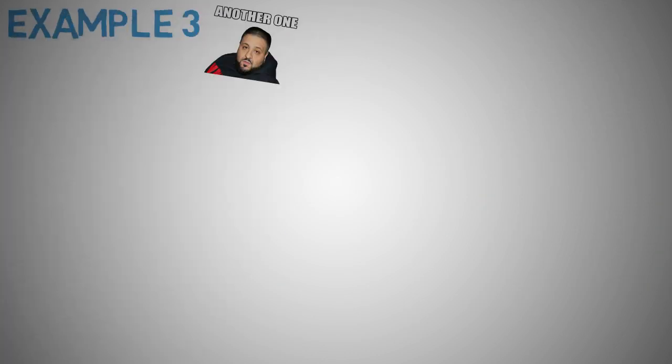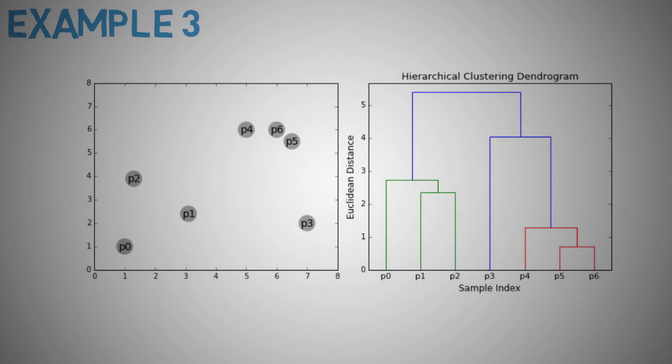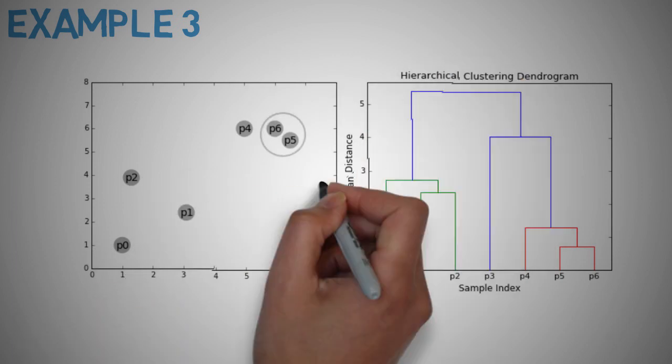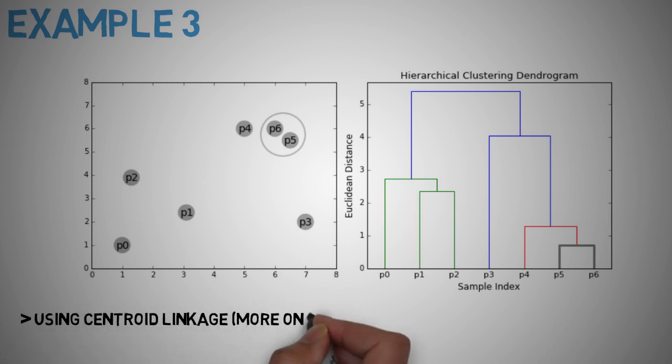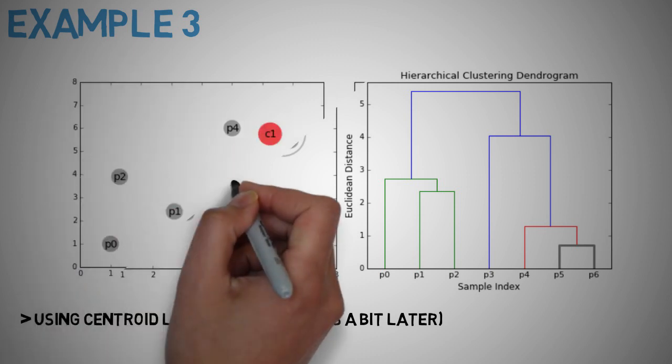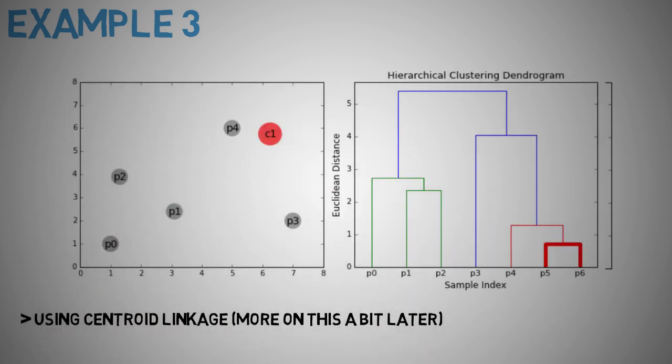Let's take a look at one more example. So here is a data set of 7 data points or clusters in this case, P0 to P6. We start with the closest clusters P6 and P5. We use centroid linkage which means that we use the euclidean distance between the centroid of the two clusters. We'll discuss other linkage methods later on in this video. So those two clusters become one cluster, C1.